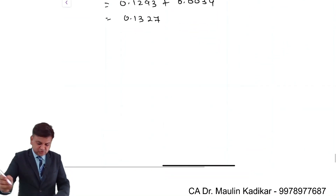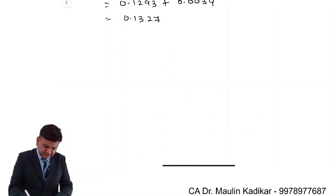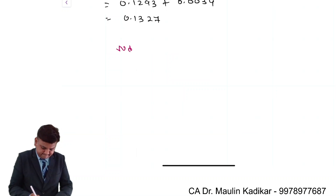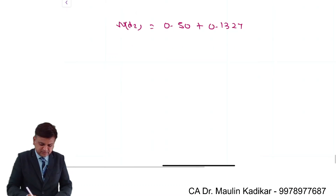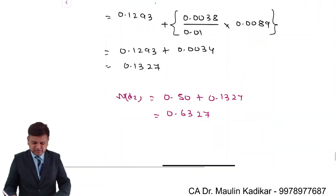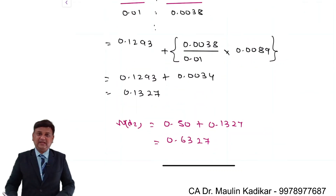Dear students, based on that we will compute ND2. It is 0.50 plus 0.1327, so ND2 equals 0.6327. That is the way ND2 can be found.